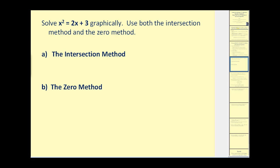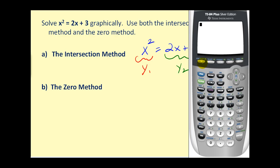Let's solve this first example using both methods. We want to solve x squared equals two x plus three graphically. Using the intersection method, we graph the left side in y one and the right side in y two. We want to know when these two are equal, which is when they intersect.